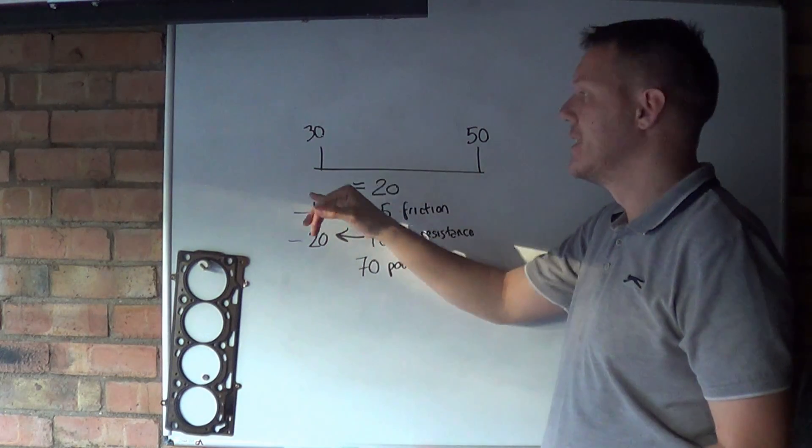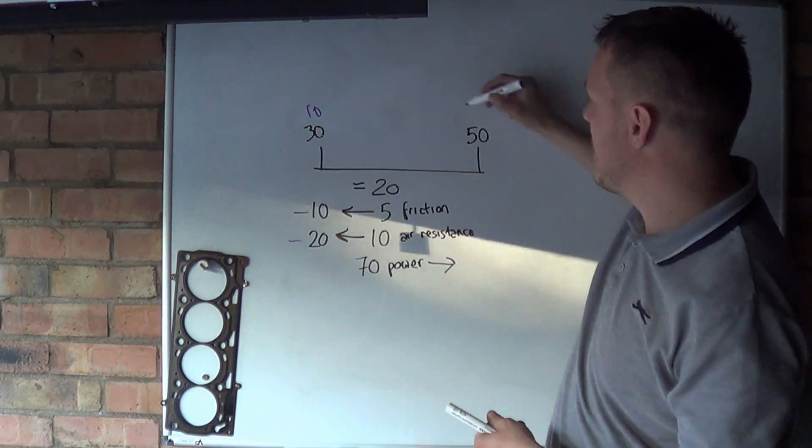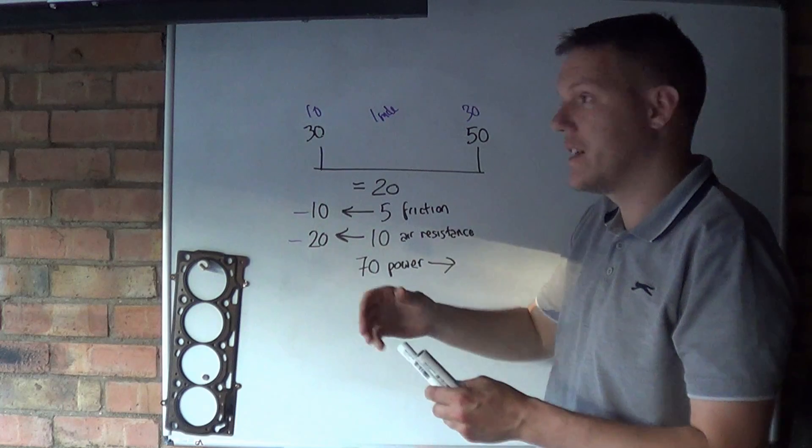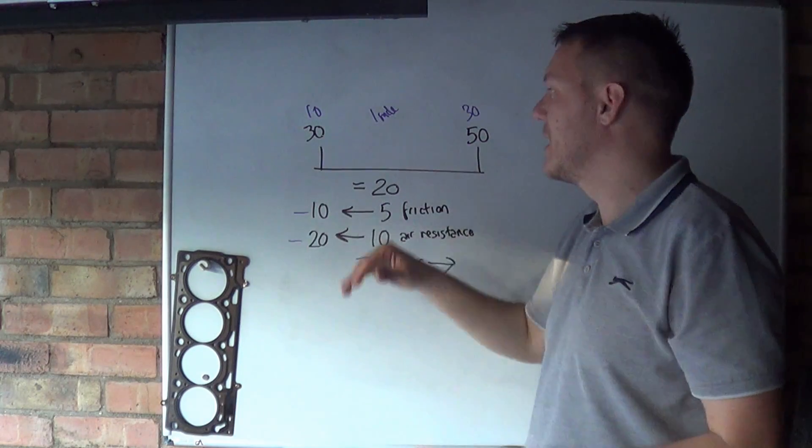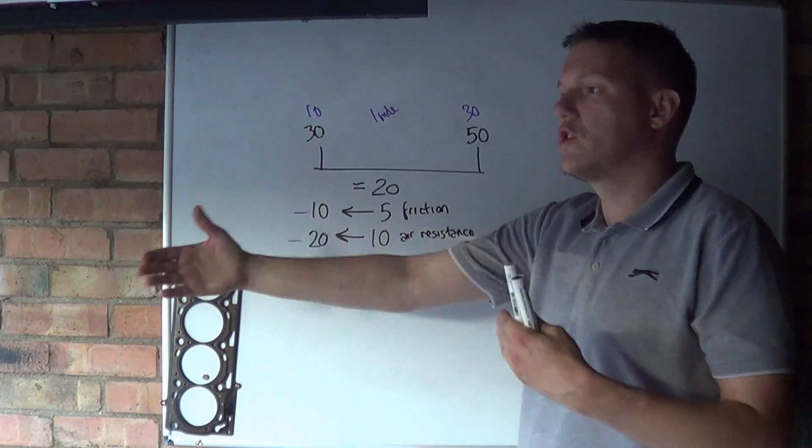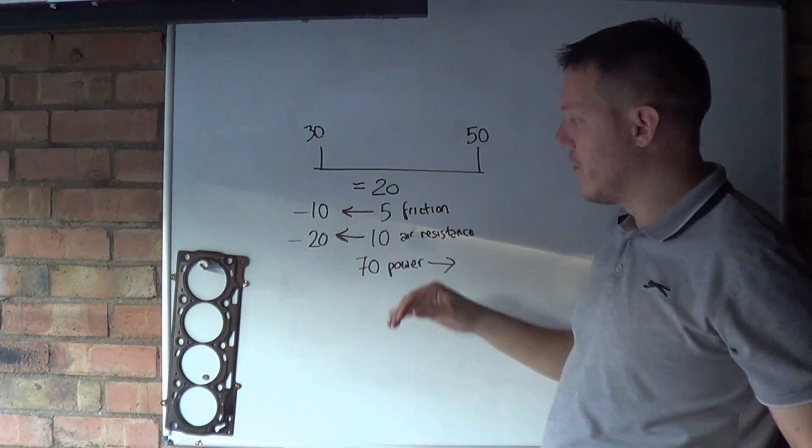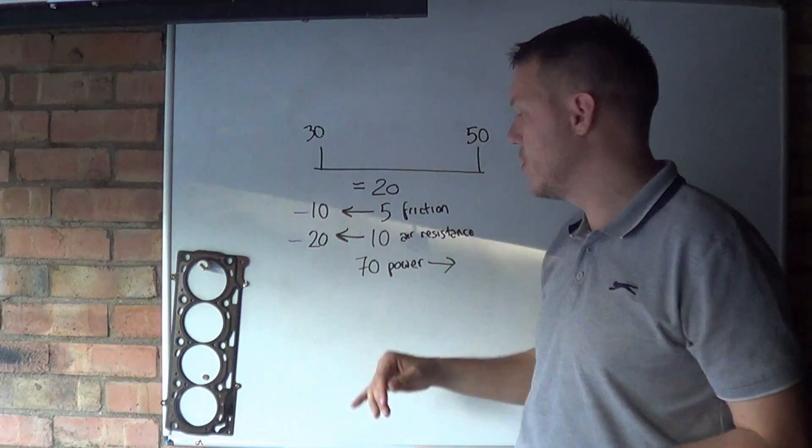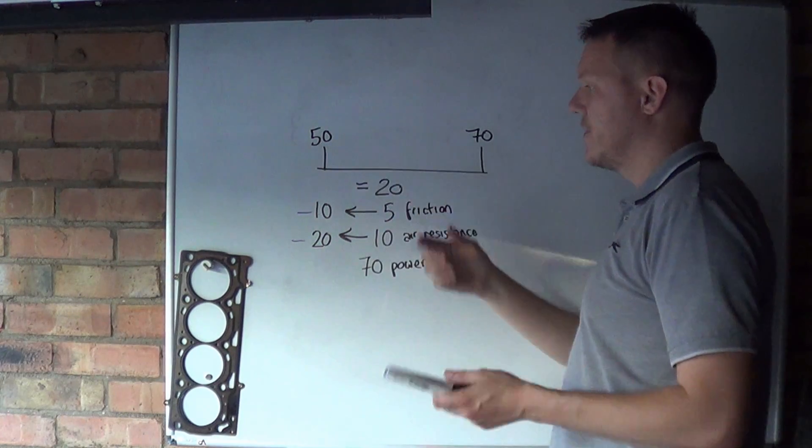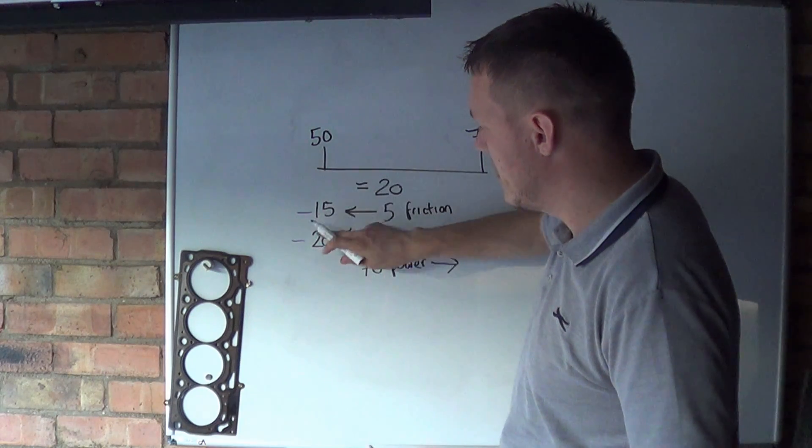The reason why your friction and the air resistance doubles is because you've got to remember that we're now going faster. We're going from 30 to 50, which when we were going from 10 to 30 we'll just say we're covering one mile a minute. Now we're going 30 to 50, we're covering twice the distance. So now we're going to encounter twice the friction because we're covering twice as much road and twice the air resistance because we've got to plough through twice as much air.